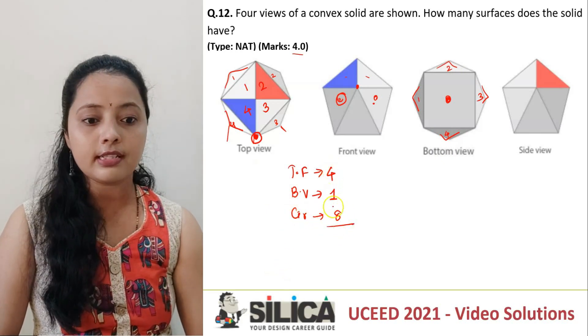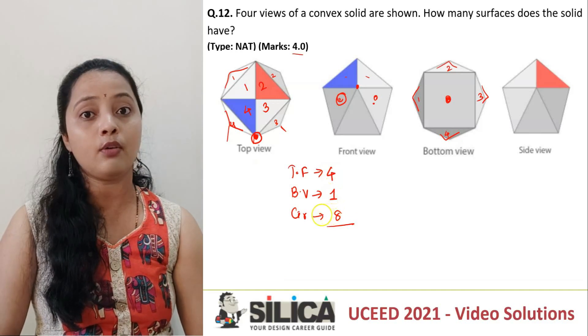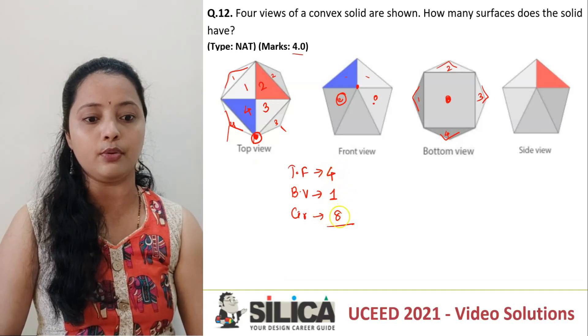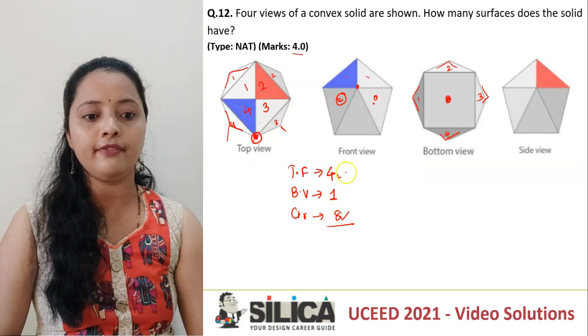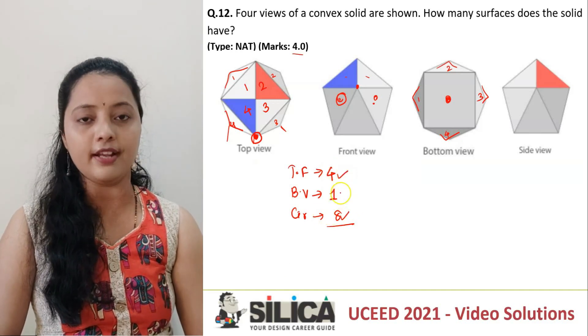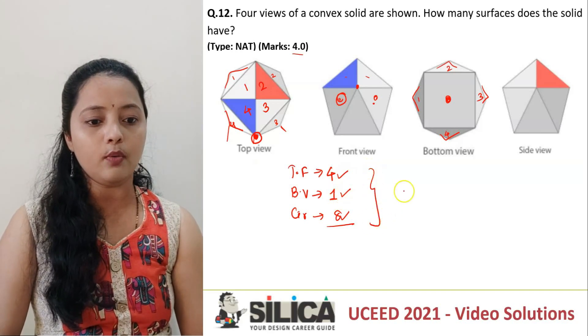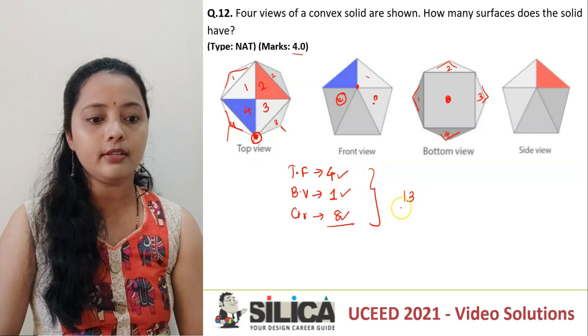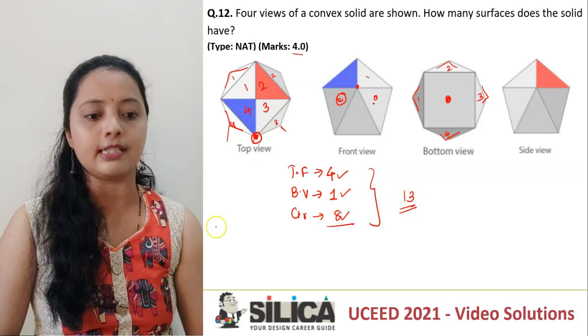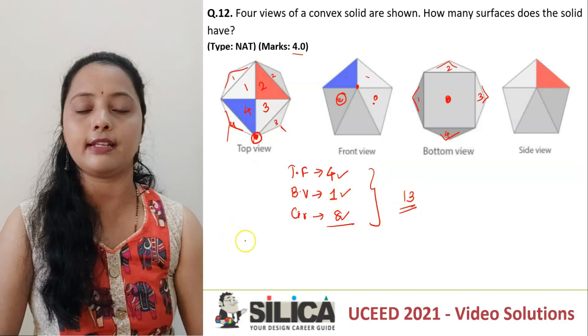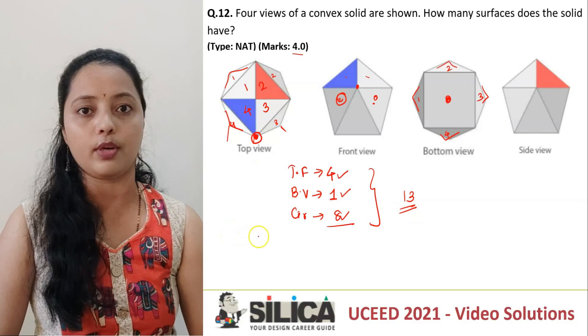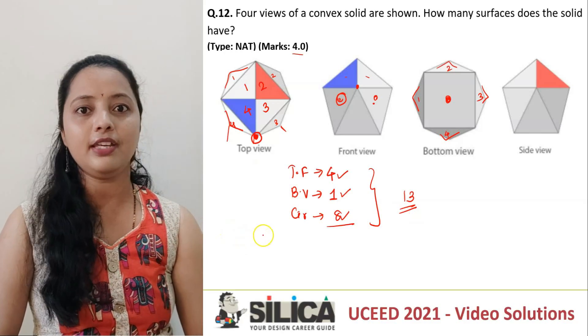So this completes our count of total surfaces, which is equal to 8 and 4, that is 12, plus 1 is equal to 13 surfaces. And that's the right answer to this question. Thank you.